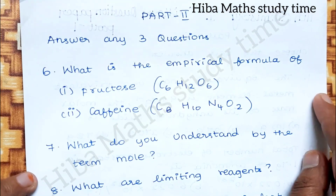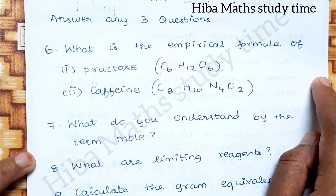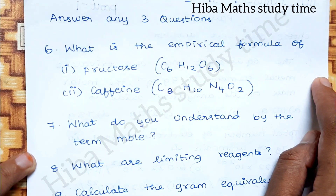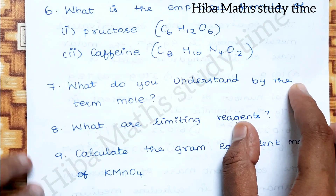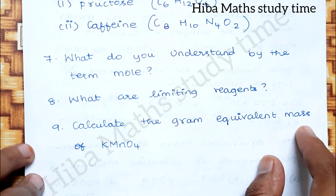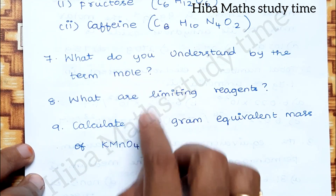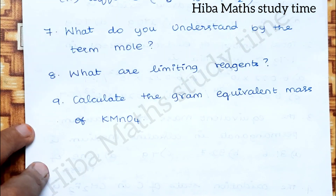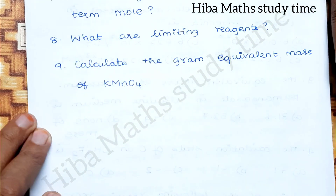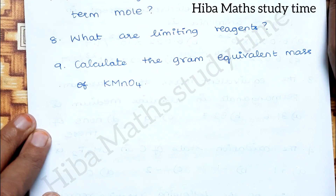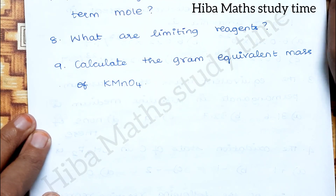Part 2: answer any 3 out of 4 questions. What is the empirical formula of fructose and caffeine? What do you understand by the term mole? Mole is the main question and it repeats frequently. What are limiting reagents? — that is the 9th question. Calculate the gram equivalent mass of KMnO4. Gram equivalent mass questions appear regularly. These are the types of questions in Part 2.